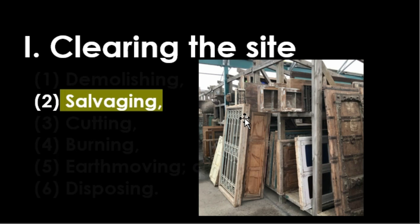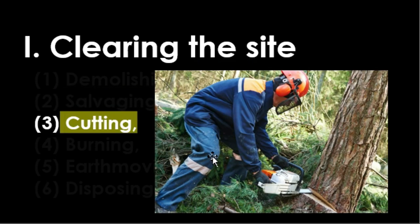Salvaging means saving things from being demolished or destroyed. This can be done by tearing down, taking apart, or removing wanted material from the site. When a building is to be demolished, most electrical switchboards, plumbing fixtures, electrical fixtures, and doors and windows are salvaged.